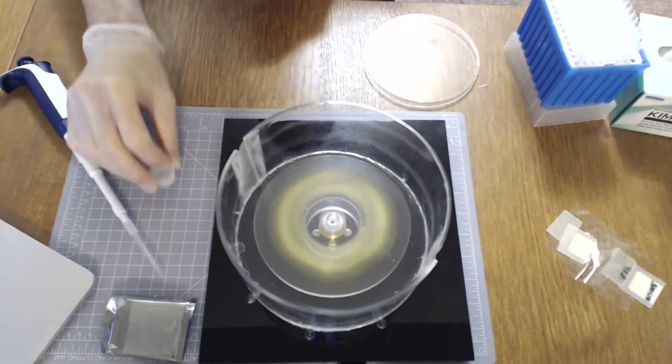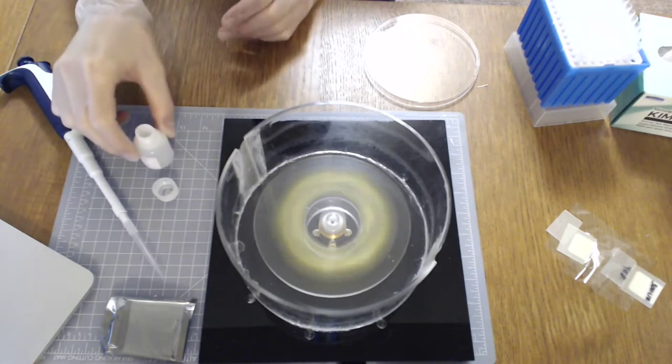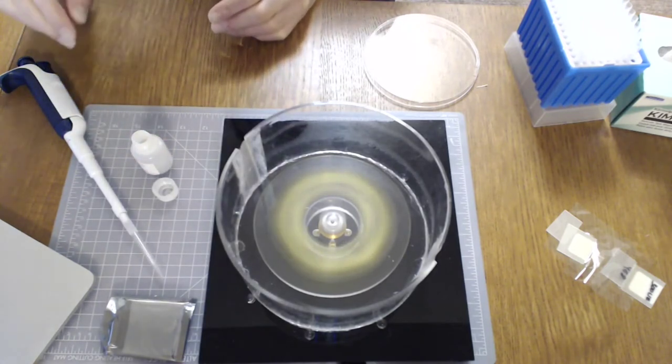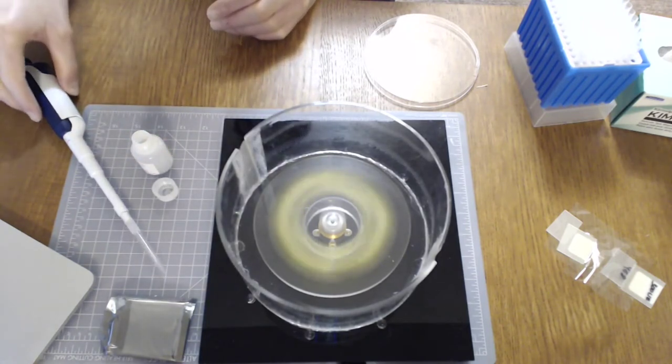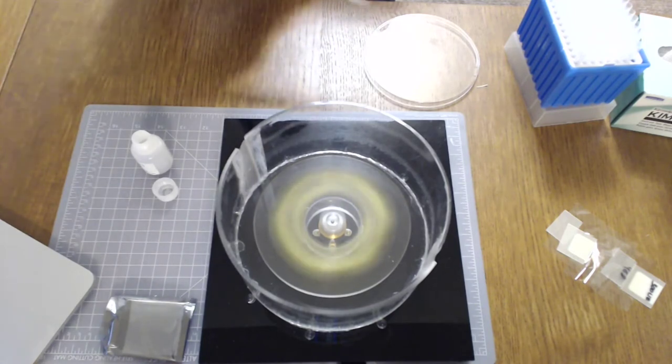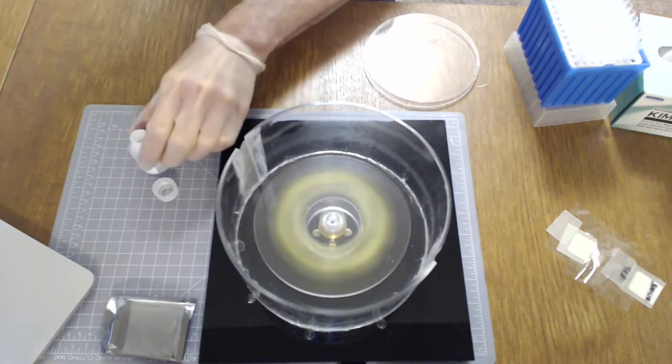Once it's up and spinning at thousand rpm we're going to dispense 450 microliters of the fluoropel hydrophobic coating onto the center while it spins and then let it spin for about 30 seconds afterwards to spread.